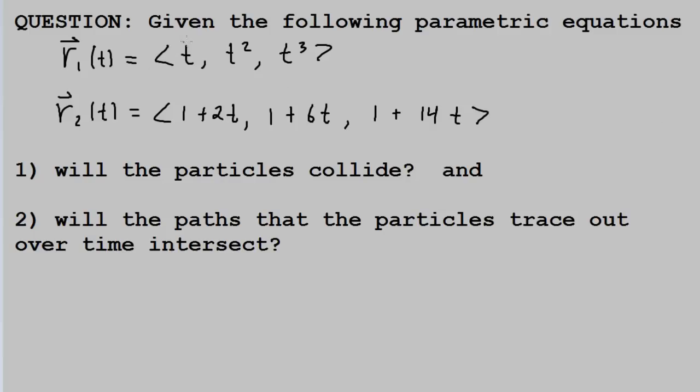Let's say that we're given the following parametric equations: r₁(t) equals ⟨t, t², t³⟩ and r₂(t) equals ⟨1+2t, 1+6t, 1+14t⟩, that's the x, y, and z component respectively. And we ask ourselves two questions.